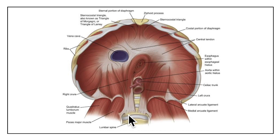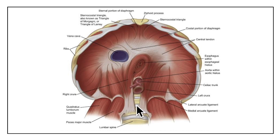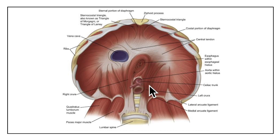The right crus is larger and stronger than the left crus. It arises from the anterolateral surfaces of the bodies of the upper three lumbar vertebrae. The left crus arises from the corresponding parts of the upper two lumbar vertebrae.